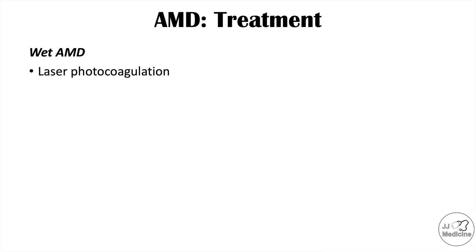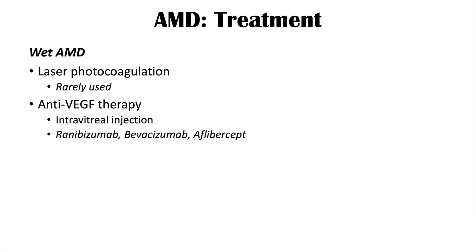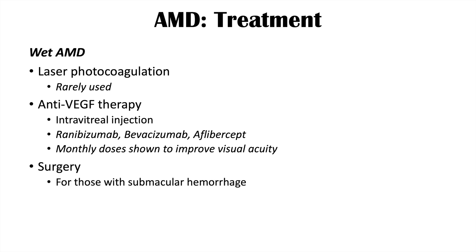For wet AMD, laser photocoagulation is rarely used now due to poor outcomes. Anti-VEGF therapy — targeting VEGF isoform 165 to inhibit neovascularization — is administered by intravitreal injection. Agents include ranibizumab, bevacizumab, and aflibercept. Monthly doses have been shown to improve visual acuity. For patients with submacular hemorrhage, surgery with intravitreal TPA and pneumatic displacement may also be utilized.